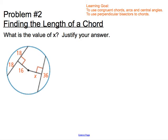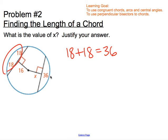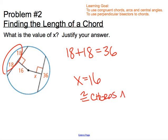For the example, we're asked to find the value of X. First, we find the total length of the chord: 18 plus 18 equals 36. So both chords have a value of 36, and we have right angles at both. Therefore the value of X has to be 16 by the theorem. To justify our answer, we would say that congruent chords are the same distance from the center.